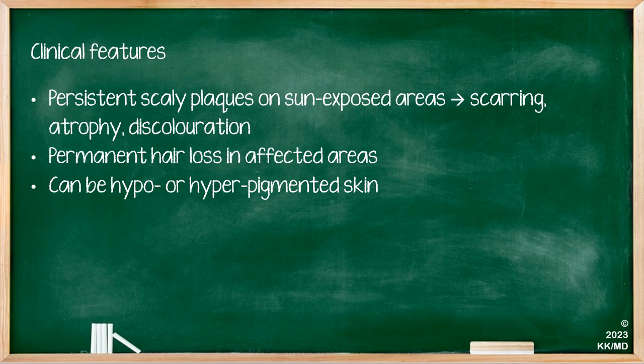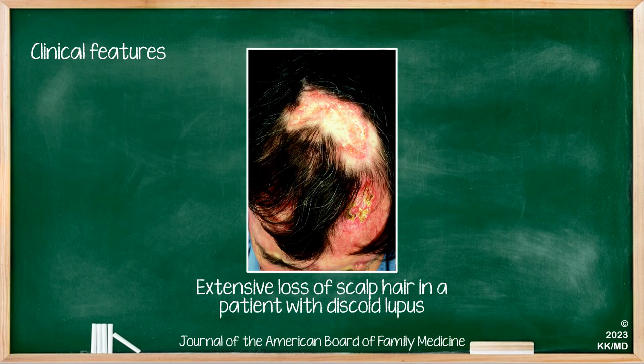Discoid lupus is characterised by persistent scaly plaques on sun-exposed areas, which lead to scarring, skin atrophy, and discolouration. There's also permanent hair loss in the affected areas, and this condition can lead to either hypo- or hyper-pigmented skin. In this image, you can see the sequelae of the effects of discoid lupus leading to extensive loss of scalp hair as well as scarring of the scalp.